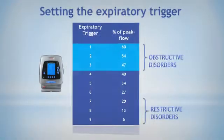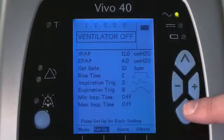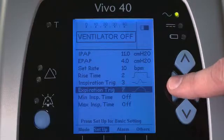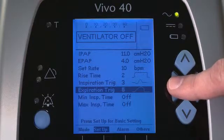Conversely, in obstructive disorders like chronic obstructive pulmonary disease, this cycling criterion is set usually at higher values of peak flow, shortening inspiratory time and avoiding auto-PEEP and air trapping.